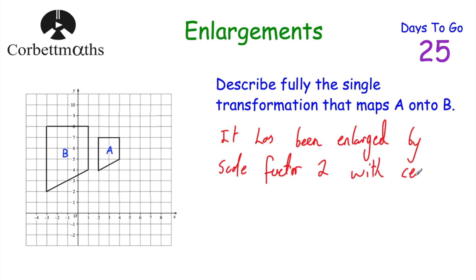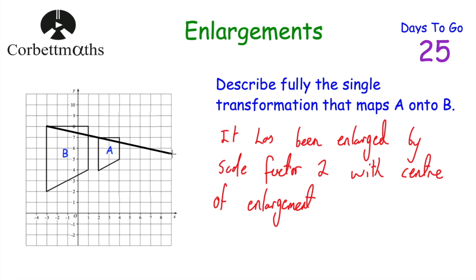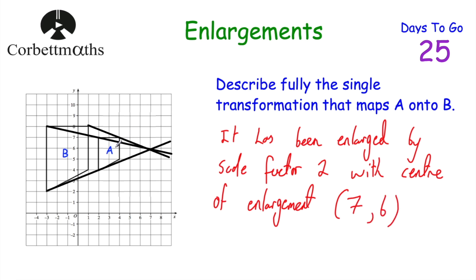Now we need to find the centre of enlargement. To do this, we choose corresponding points of the shapes — for instance the top left of A and the top left of B — and draw a line through them, extending it. Then we choose two other corresponding points, such as bottom left and bottom left, and draw a line through those as well. Both lines pass through the point (7, 6), confirmed by also checking the top right points. So the centre of enlargement is (7, 6). The full description: enlargement by scale factor 2 with centre of enlargement (7, 6).